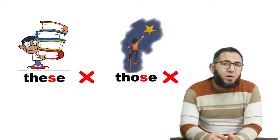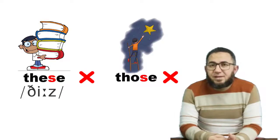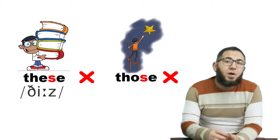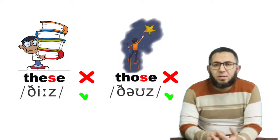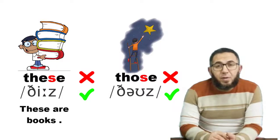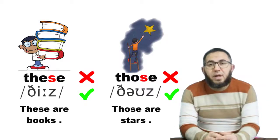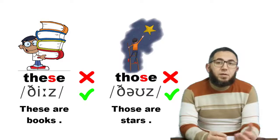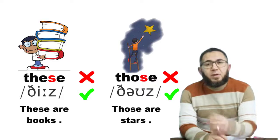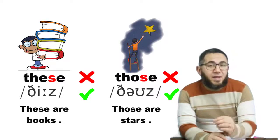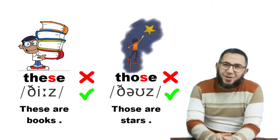The plural form of 'this' is 'these,' and the plural form of 'that' is 'those.' So I can say 'these are books' and 'those are stars.' Don't say 'these' and 'those' with an S sound — they are pronounced with a Z sound: 'these' and 'those.' Thank you very much for watching. Goodbye.